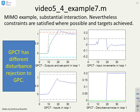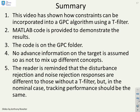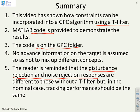Finally, example 7 is the multivariable case. Comparing these plots with those from the previous video, you'll see the disturbance rejection is different when using GPC with a T-filter versus without. In summary, the video has shown how constraints can be incorporated using a T-filter. The MATLAB code is provided on the GPC folder to demonstrate the results. The key takeaway is that disturbance and noise rejection responses differ from those without a T-filter, but in the nominal case everything should be the same.